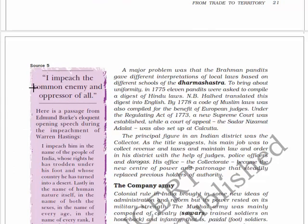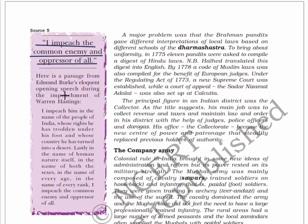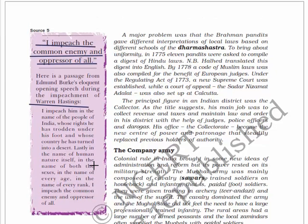Here is a passage from Edmund Burke's eloquent opening speech during the impeachment of Warren Hastings: 'I impeach him in the name of the people of India whose rights he has trodden under his foot and whose country he has turned into a desert. Lastly, in the name of human nature itself, in the name of both sexes, in the name of every age, in the name of every rank, I impeach the common enemy and oppressor of all.'